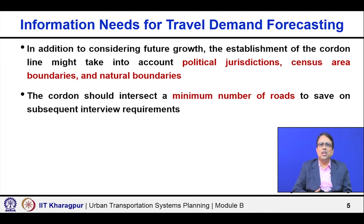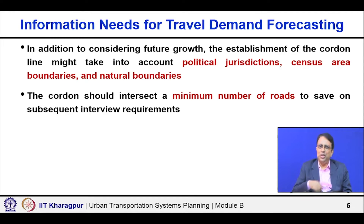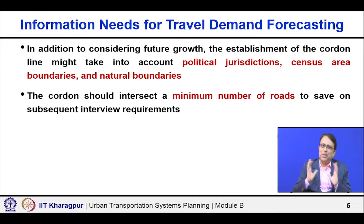In addition to considering future growth, the establishment of the cordon line should also take into account the political jurisdiction, the census area boundaries, and natural boundaries. Why is this important? Because we require a lot of other data — for example, population data, economic census data, different types of employment data, and vehicle ownership data. If our study area boundary does not match the census boundary, we cannot readily use that data. Data may be available based on political jurisdiction or census area demarcation.